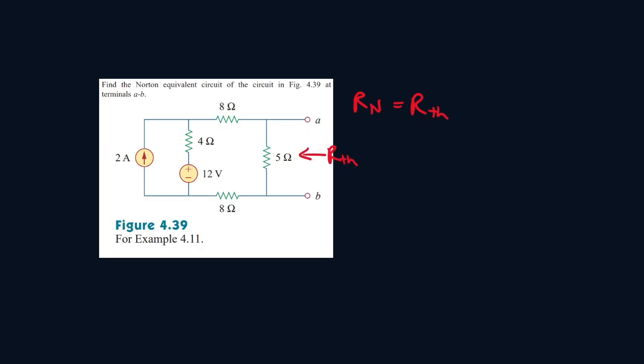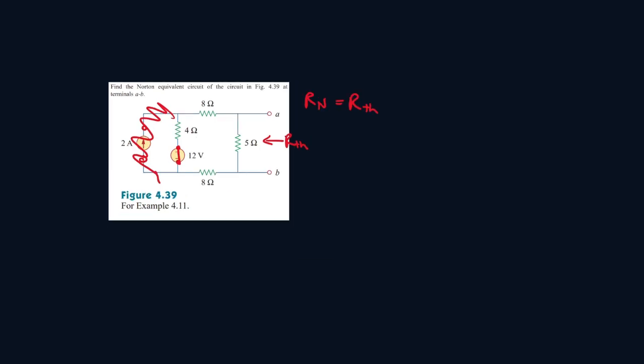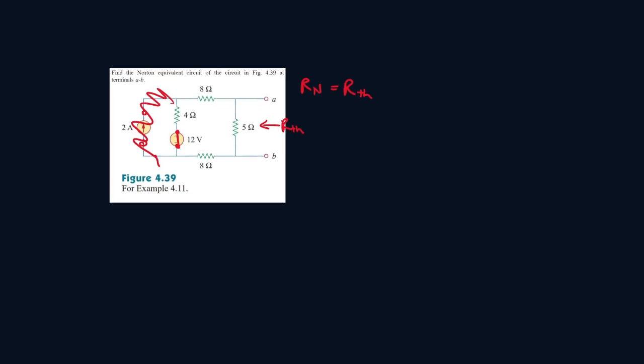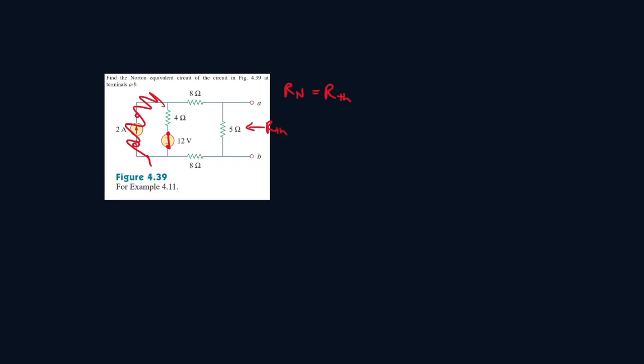We turn off all sources that are independent. So this one will be replaced with an open wire, we can just ignore this portion. And this one will be replaced with a closed short circuit, so it'll be a closed wire here. We will redraw the circuit so it'll look like this.